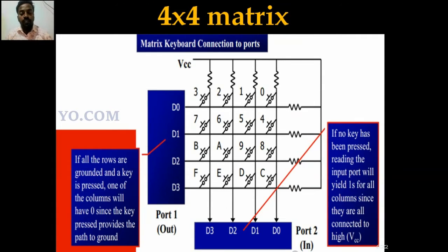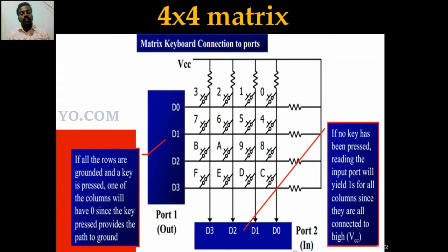Here we use two ports — Port 1 and Port 2. Port 1 acts as an output port using D0, D1, D2, D3, and Port 2 is an input port using D0, D1, D2, D3. If all the rows are grounded and a key is pressed, one of the columns will have zero since the key press provides a path to ground.